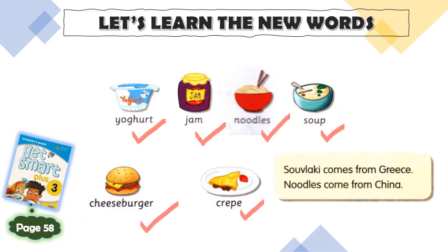So let's read this one. Souvlaki comes from Greece. Can you look here? Souvlaki is in singular form, that's why we put S for the verb. Let's read the second one: Noodles come from China. Can you see the S here? S means plural, that's why we don't put S at the verb.